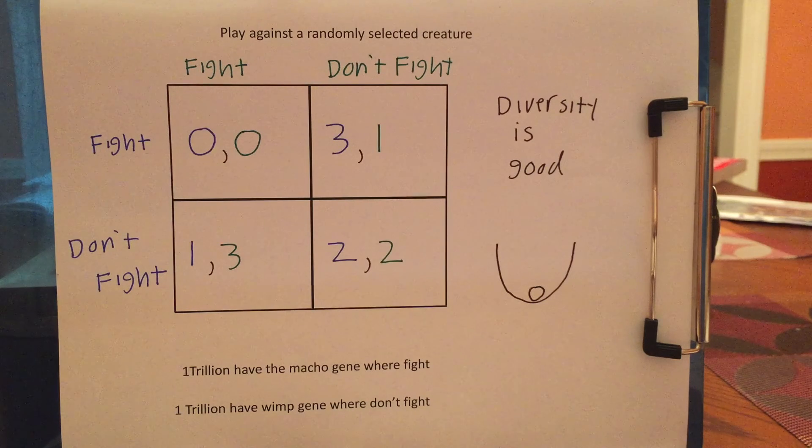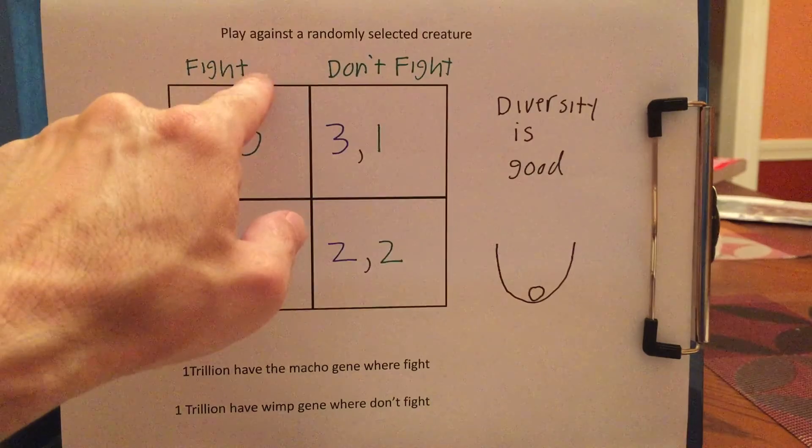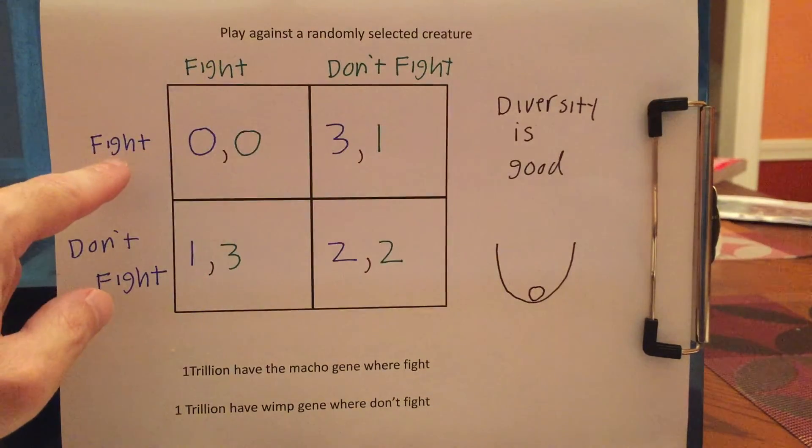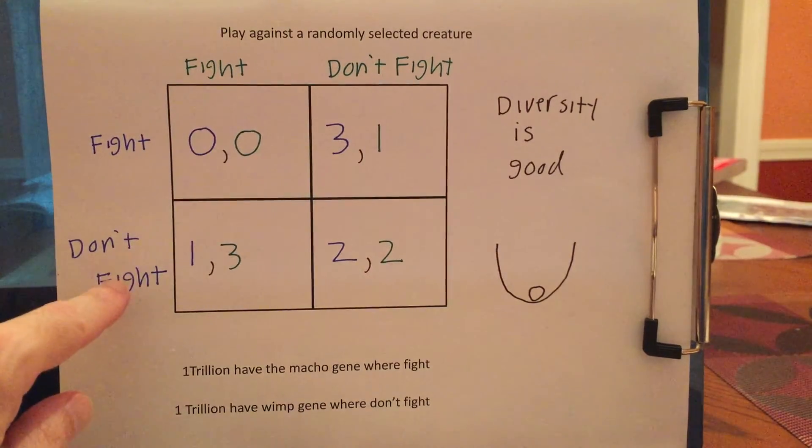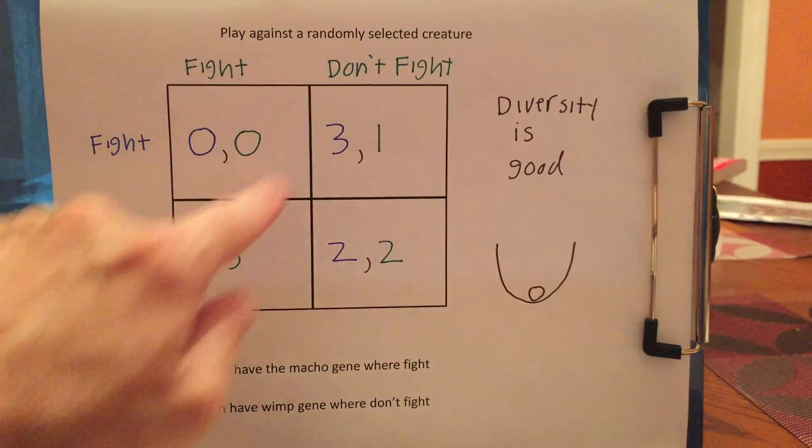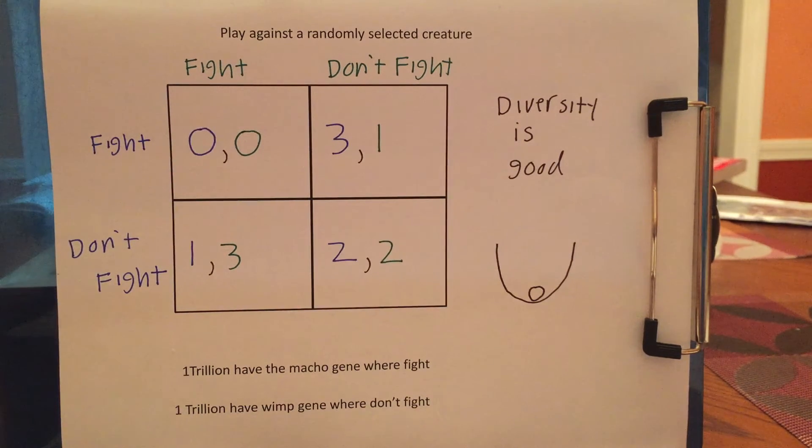So in this game, there is a mixed strategy Nash equilibria of one half, one half, where you fight half the time and don't fight half the time. Let's just verify that. For there to be a mixed strategy Nash equilibria, I've got to have equal expected payoffs from doing any of my pure strategies. So if the other guy is going to fight half the time and not fight half the time, if I fight, my average payoff is one half times zero plus one half times three, which is 1.5. If I don't fight, my average payoff is one half times one plus one half times two, which is also 1.5. So the mixed strategy Nash equilibria exists where everyone fights half the time and doesn't fight half the time.